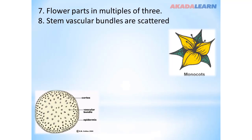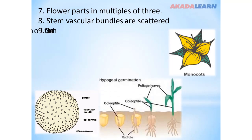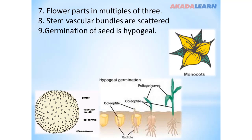The stem vascular bundles are scattered. Germination of the seed is hypogeal. Basically, we have two types of germination: epigeal germination and hypogeal germination. Hypogeal germination is a type where the cotyledons remain below the soil level, while epigeal germination is a type where the cotyledon is above the soil level. We shall see that as we go further.